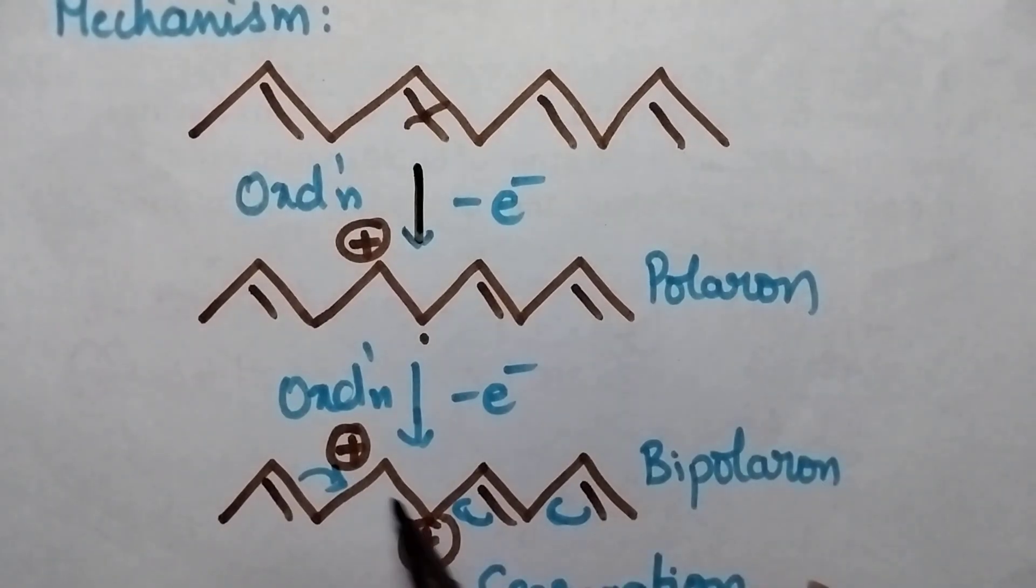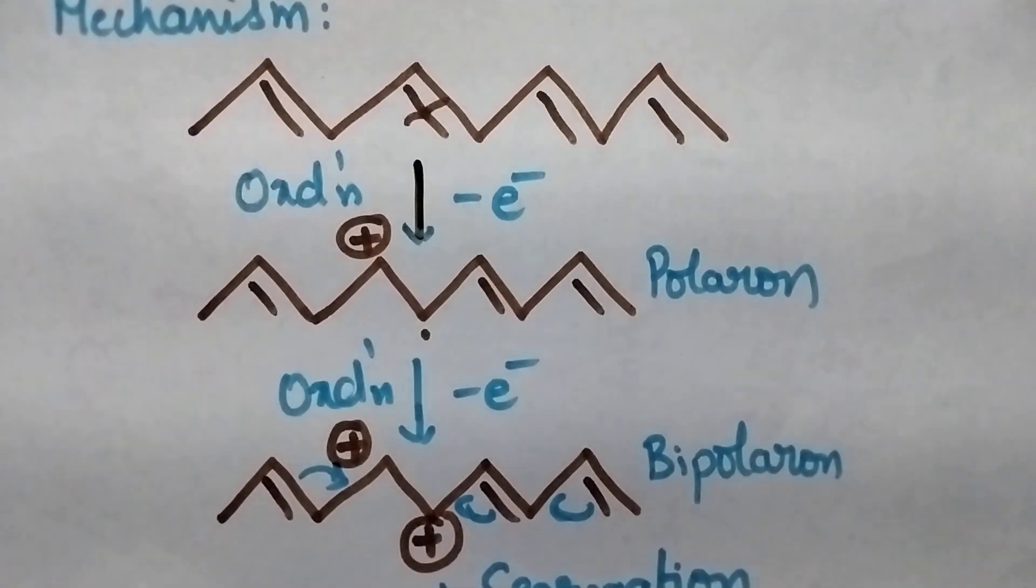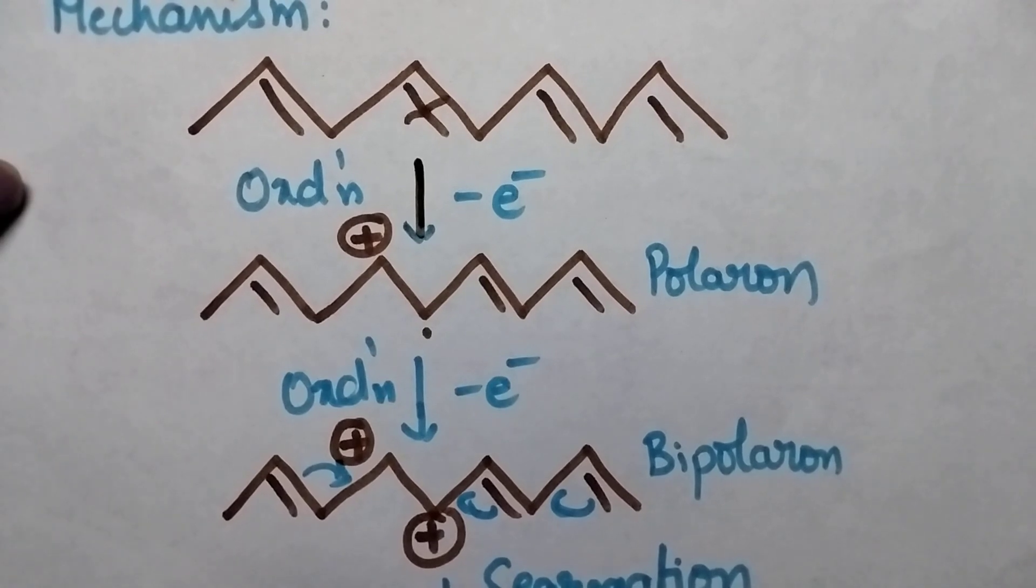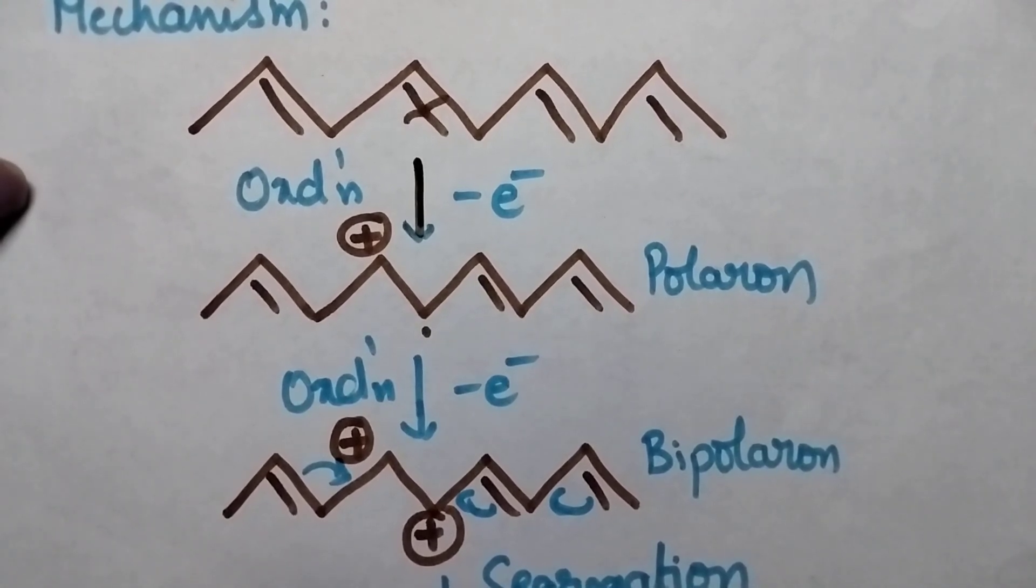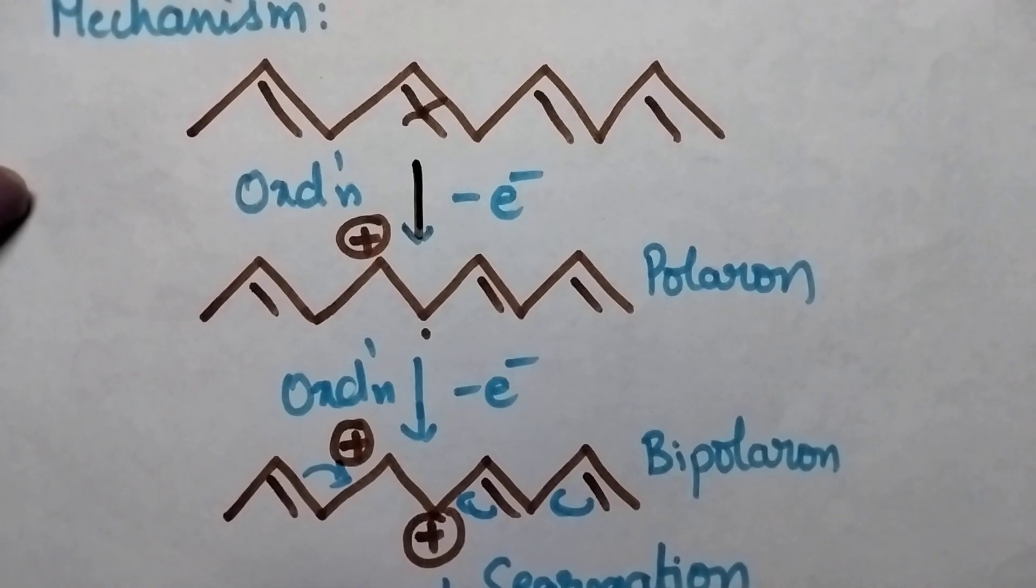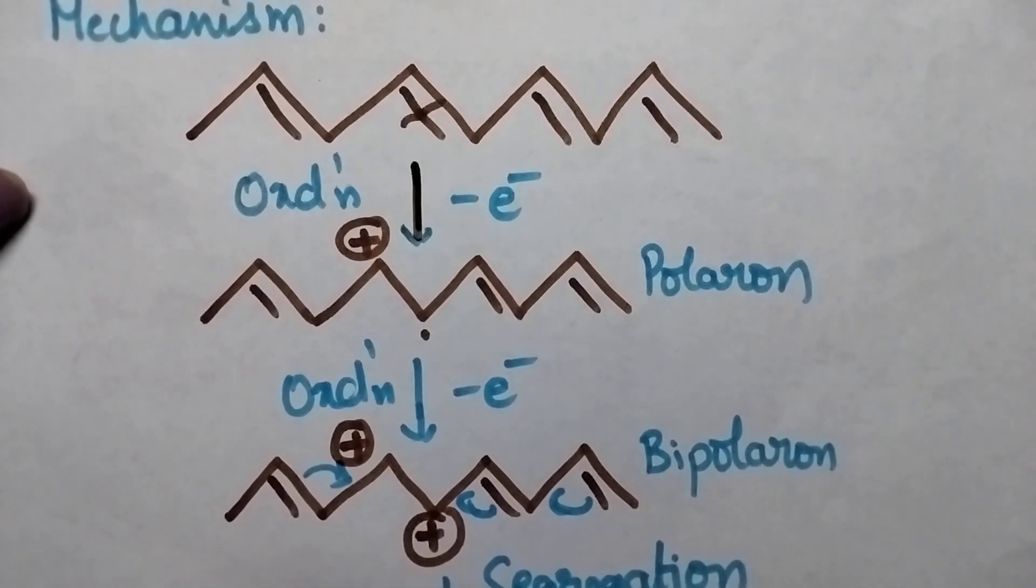Once we carefully observe the structure of bipolaron, it consists of two charges which are very close to each other, and hence it gives instability to the polymer.